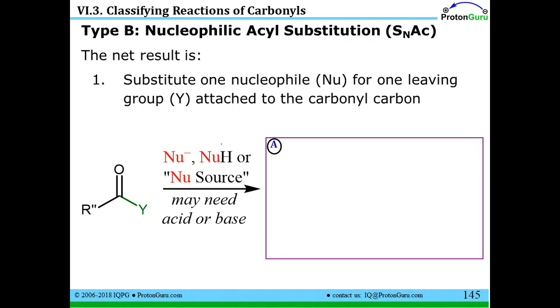Now what I call B, in general terms, people call nucleophilic acyl substitution reactions, sometimes abbreviated S subscript NAC. I might say SNAC just to abbreviate this, nucleophilic acyl substitution type B. The net result here is that instead of just having the nucleophile add and then protonating the oxygen, the net result is that you replace or substitute the Y group with the nucleophile.